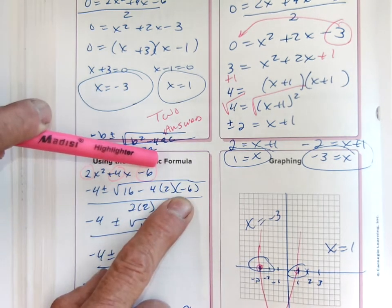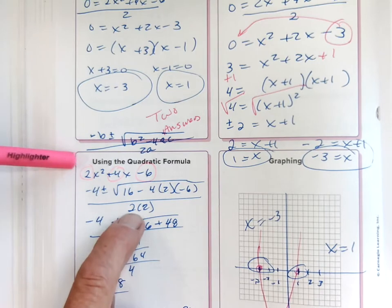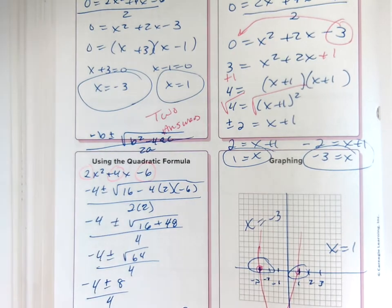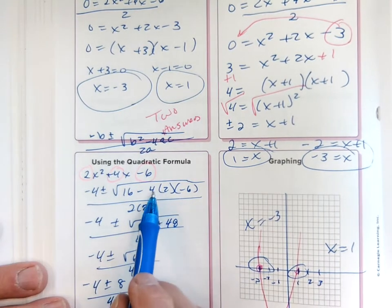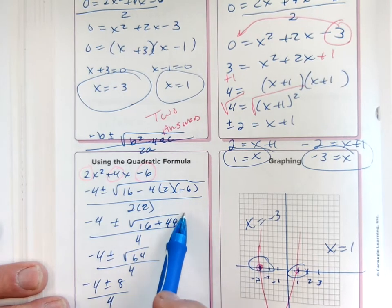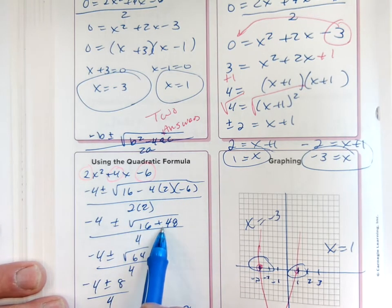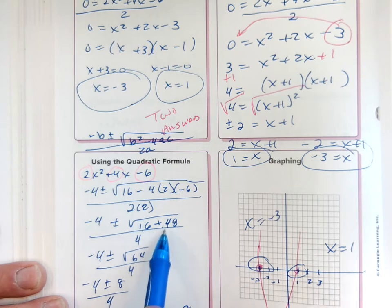...all divided by 2a. I simplified: 4 × 2 × 6 = 48, and negative negative makes positive, so +48. I added 16 + 48 and got 64.